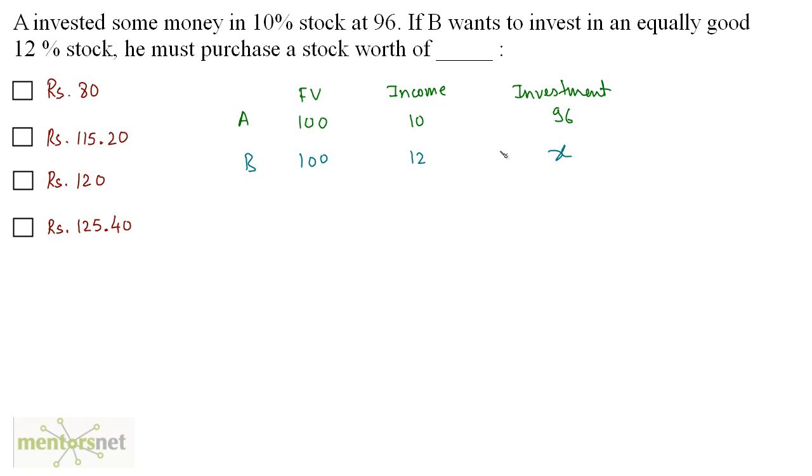So this becomes directly proportional. So I can say that the 12% stock is as good as 10% stock if we calculate an appropriate value of X. So I can cross multiply and equate. I get X times 10 equals 96 times 12. So X equals 96 times 12 by 10. And 96 times 12 is 1152. So the market value of the stock of 12% is basically 115.2 rupees. So the answer is option B.